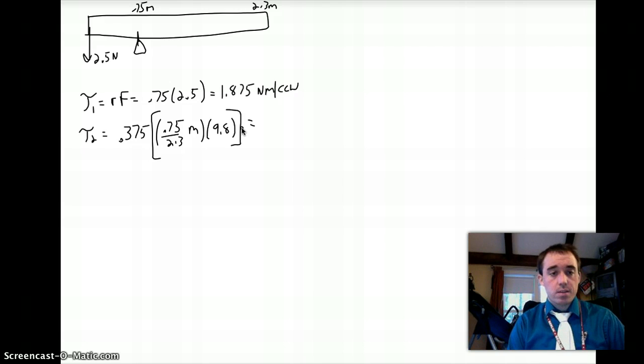A lot of you did the 0.75 over 2.3 separately and got 0.33 or 0.326. I'm going to leave it as 0.326, so my number might be a little different than yours, but that's okay. I'm going to get a torque 2 of 1.198. I'm going to leave two decimals. I have that variable M, that's the thing I'm solving for, and my units are newton meters, and this is also counterclockwise.